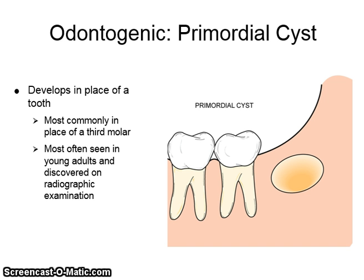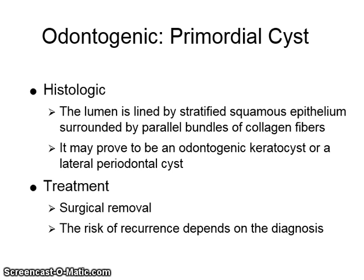A primordial cyst develops in place of a tooth. It is most commonly found in place of a third molar and is most often seen in young adults, discovered on radiographic examination. Histologically, the lumen is lined by stratified squamous epithelium surrounded by parallel bundles of collagen. It may prove to be an odontogenic keratocyst or a lateral periodontal cyst. Treatment involves surgical removal, and the risk of recurrence depends on the diagnosis.